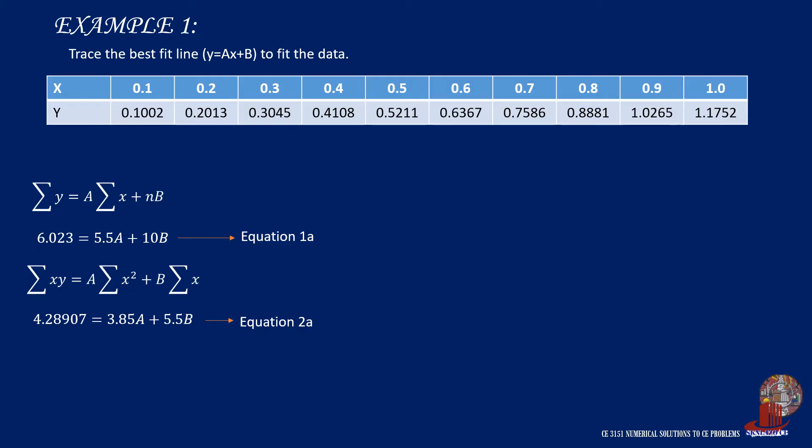Let's use substitution and start by isolating b from equation 1a. It becomes b equals 0.6023 minus 0.55a. This is equation 1b.